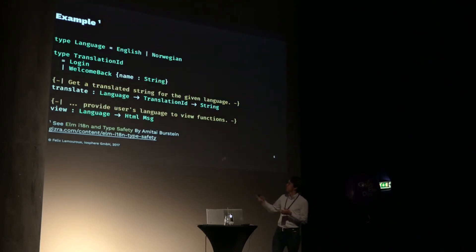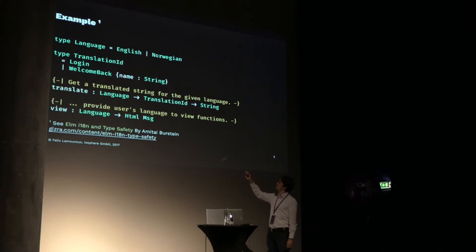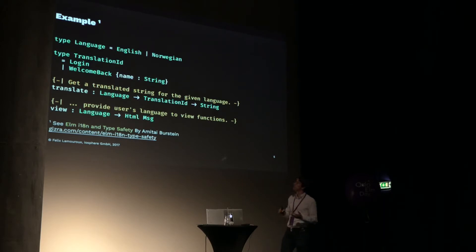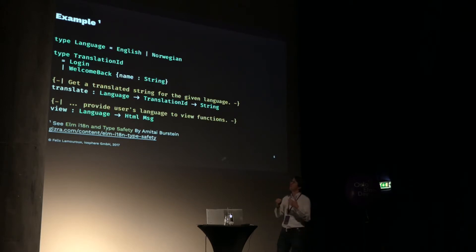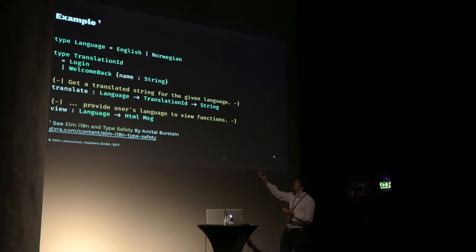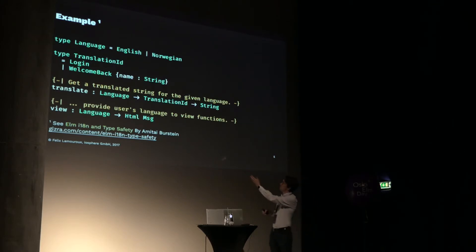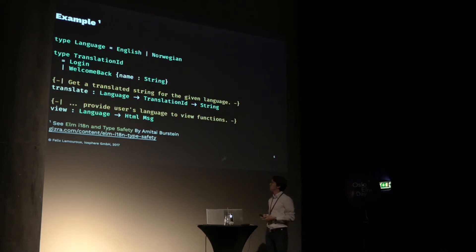One example outlined on the Jizra blog: you have your language union type describing all available languages at the top, a translation ID type giving you all available words and tokens like the name of the login button or how to welcome people, then your translation function that takes the language and translation ID and returns the translated string. In your views, you provide the language to access the translation function. It's a very easy setup, easy to grasp.